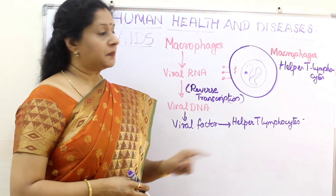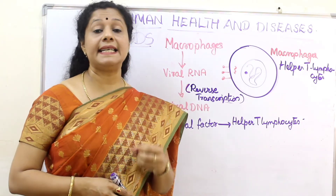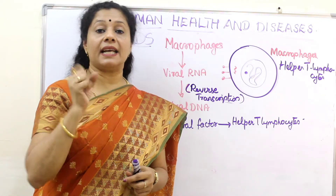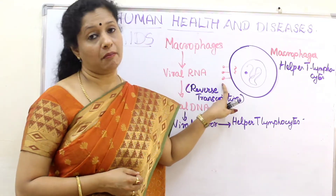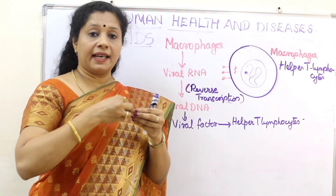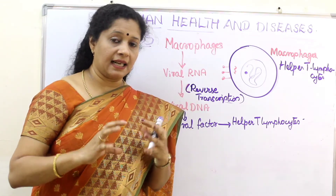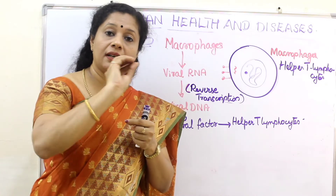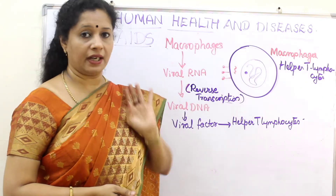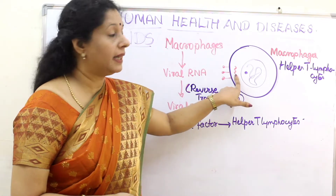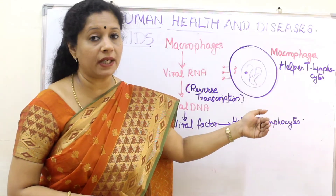Once HIV comes inside the body, it will go and bind with the CD4 receptors on the surface of macrophages. After binding, the virus will inject its RNA into the cell. Whenever a virus attacks a cell, its protein coat cannot go inside — only the genetic material goes inside. So both RNA strands are sent inside as single-stranded RNA strands. But for it to multiply, it has to get incorporated into the DNA, which is not possible for RNA directly.